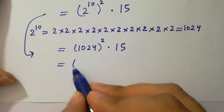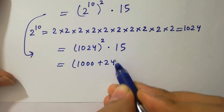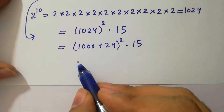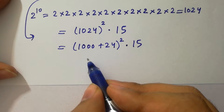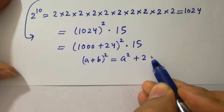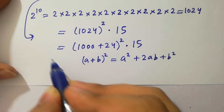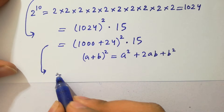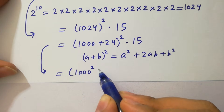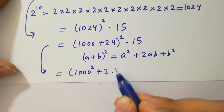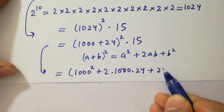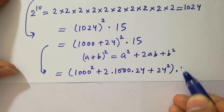1024 is the same as (1000 plus 24), so we have (1000 plus 24) to the whole power 2, times 15. We know the formula for (a plus b) whole square, which equals a squared plus 2ab plus b squared. So we have 1000 squared plus 2 times 1000 times 24 plus 24 squared, all times 15.